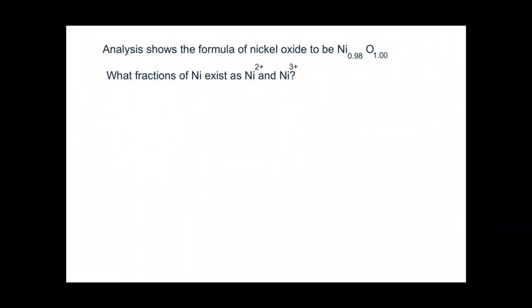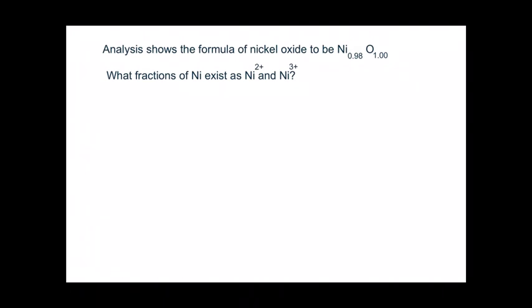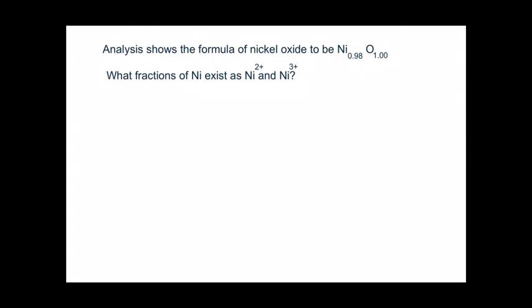The second problem: analysis shows the formula of nickel oxide to be Ni₀.₉₈O₁.₀₀. What fractions of nickel exist as Ni²⁺ and Ni³⁺? Looking at the compound, we can confirm it is a non-stoichiometric compound because there is no whole number ratio. We can see 0.98 as the composition of nickel to that of oxygen, so in this compound there is a deficiency of nickel.